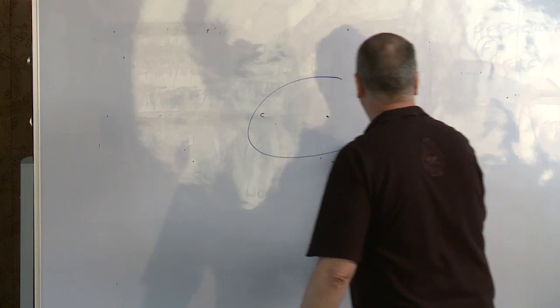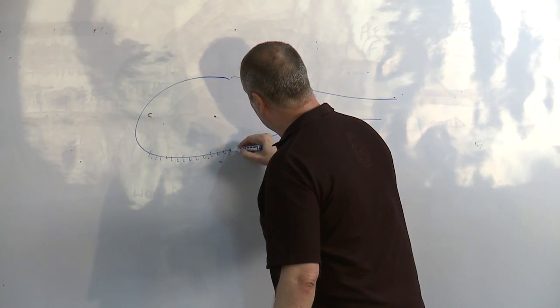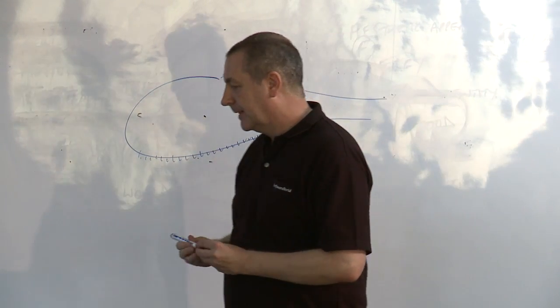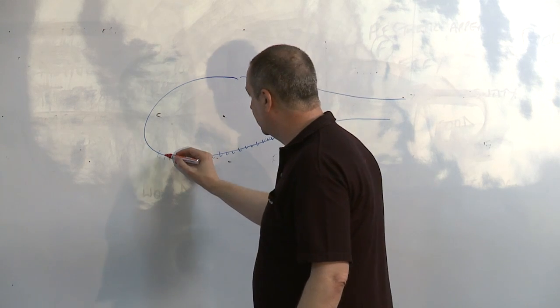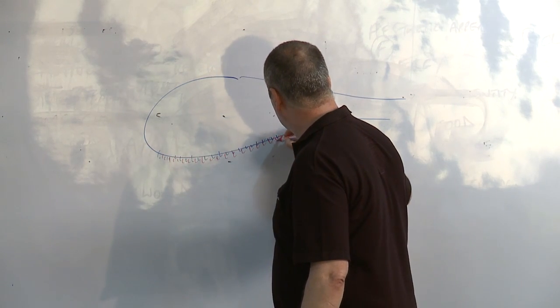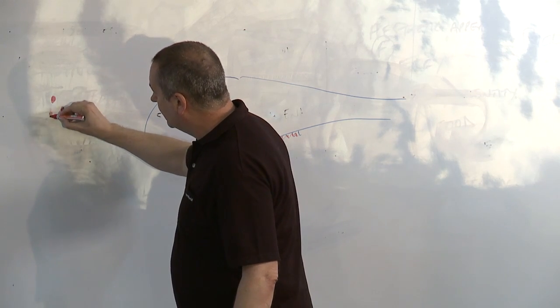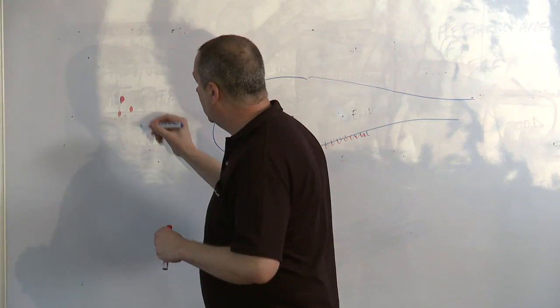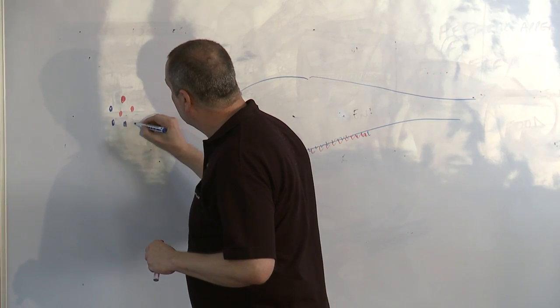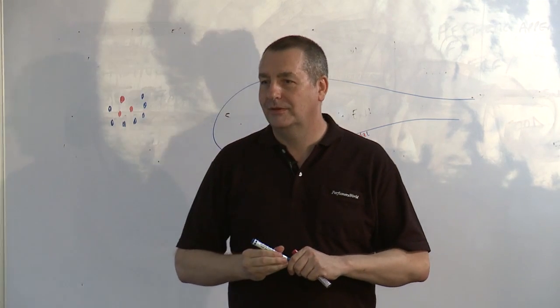If you imagine on your olfactory bulb you have receptors. This is your olfactory bulb and it has lots of little receptors. Let's say we were going to smell, we had some red receptors and we had some blue receptors.